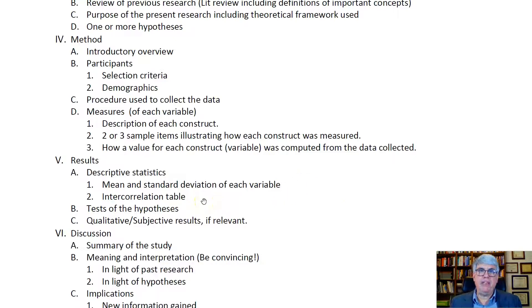The second part would be the correlation table or the table of correlations, where you show how each of the variables is related to the other variables. Each row would be variable one, variable two, variable three, four, five, six. You number them. And then the columns are numbered one, two, three, four, five, six also.